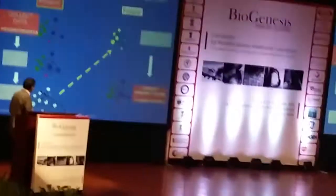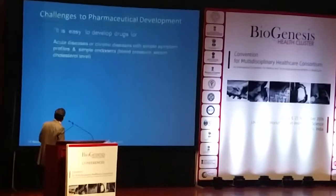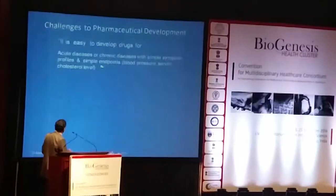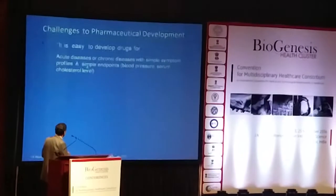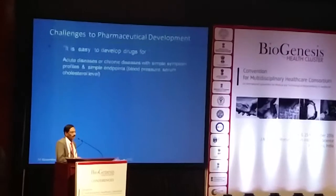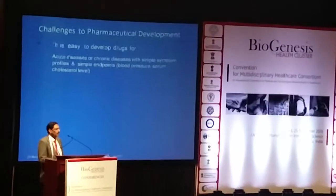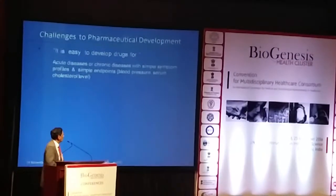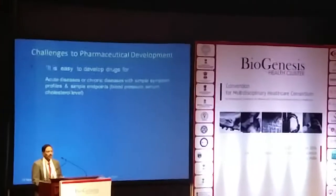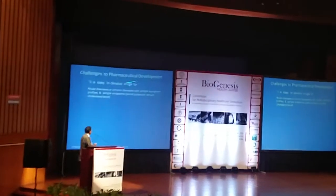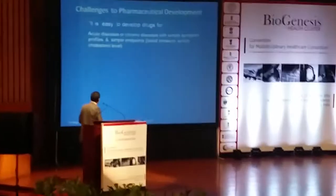The pharma industry faces significant challenges. It is very easy to develop a drug for acute or chronic disease with simple symptoms or a simple endpoint. For example, developing a drug for hypertension: take a manometer, take a patient, find out the blood pressure before giving the drug, give the drug, repeat. Developing a drug for hypercholesterolemia: measure cholesterol level, give your drug. It is very simple to develop a drug when you have a very simple symptom and a very clear endpoint.